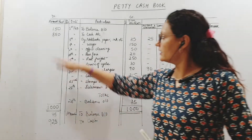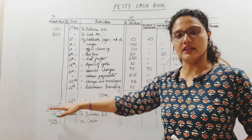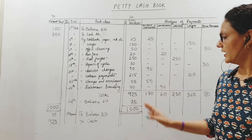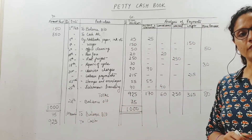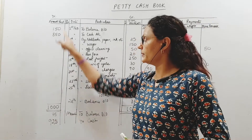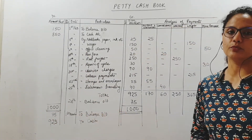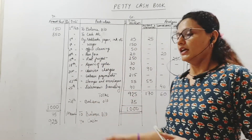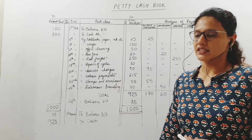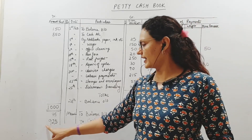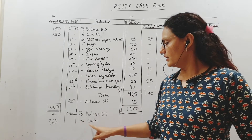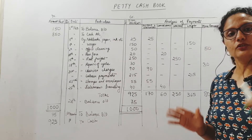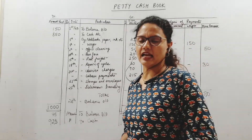The total expenses are 925. He started with 1000, spent 925, so 75 rupees is the balance remaining — this is the balance carried down. Total of payments and balance equals 1000. This is how we close. The balance of 75 is brought down on 1st of March in the amount received column. And because this is an impressed system, he will get 925 — whatever he spent — to cash on the same day at the beginning of the period.